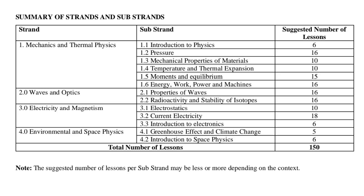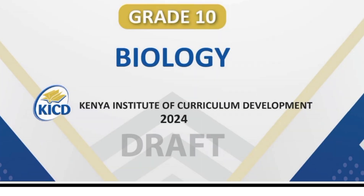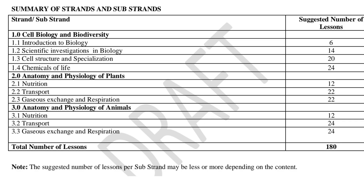Our next learning area is biology. The first strand is cell biology and biodiversity. The substrands under that are: introduction to biology, scientific investigation in biology, cell structure and specialization, and chemicals of life.